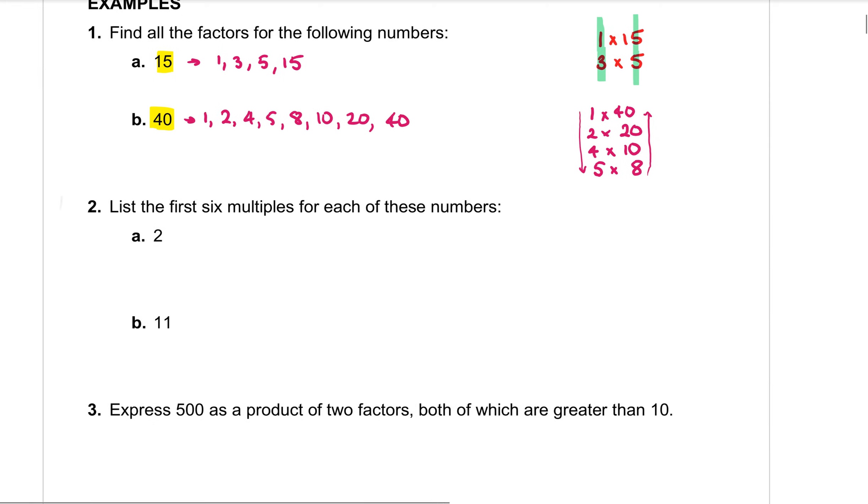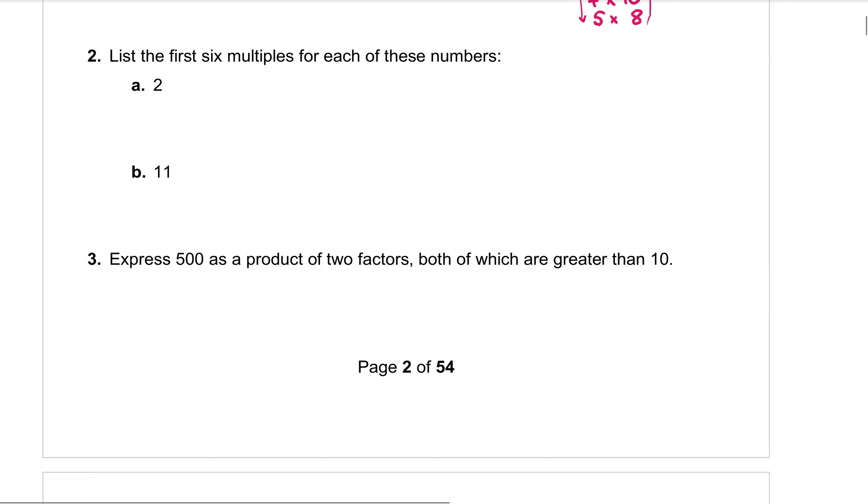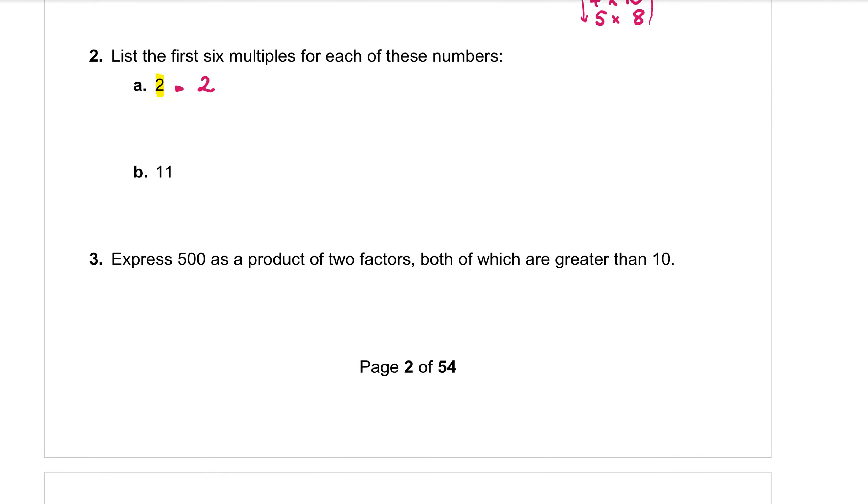Example two you want to list the first six multiples for each number. So multiples are basically the times tables. So I want the first six times tables which are the multiples of two. So two times one is two. So two is the first multiple. Two times two is four. Two times three is six. Two times four is eight. Two times five is ten. And two times six is twelve. So it's the first six multiples.